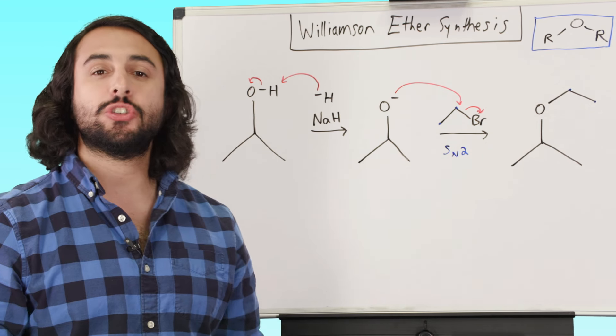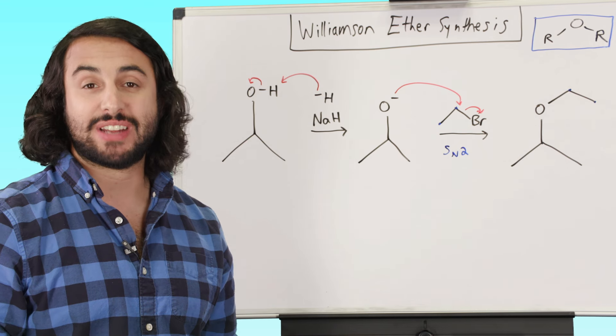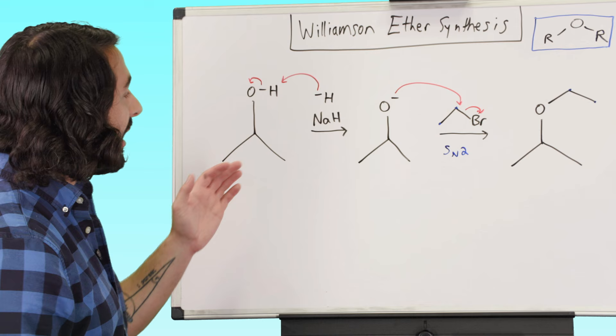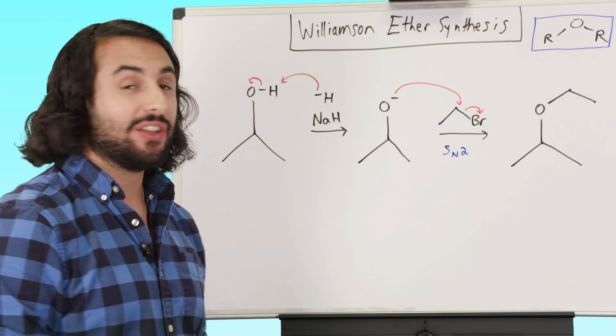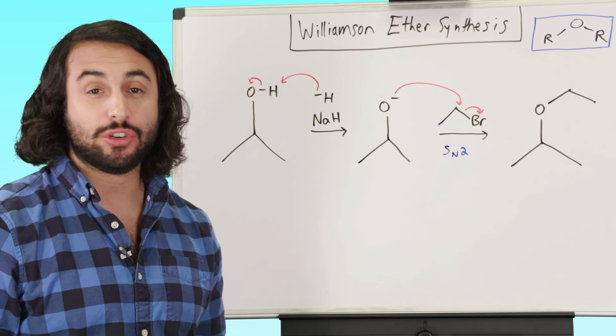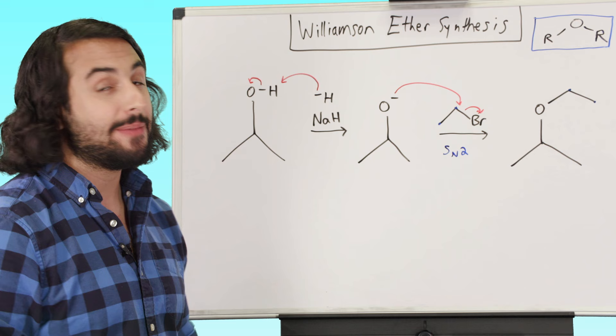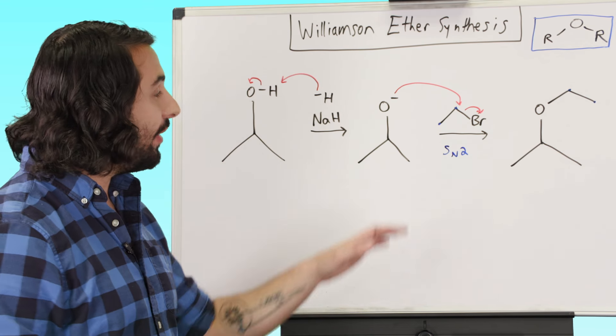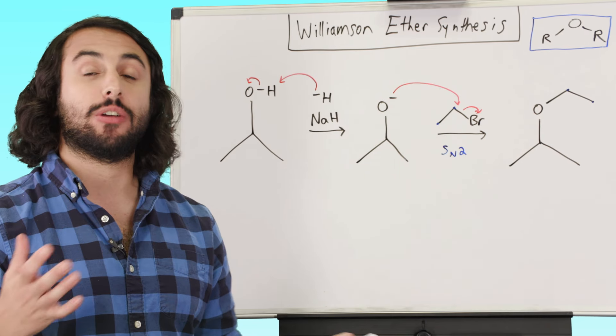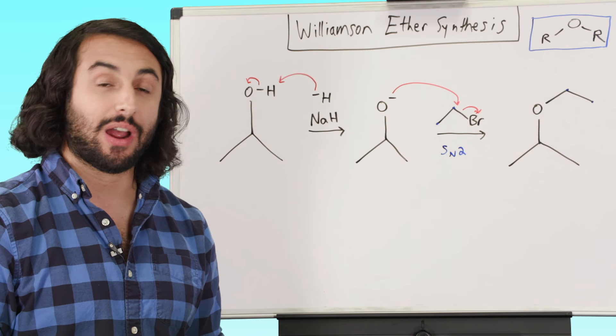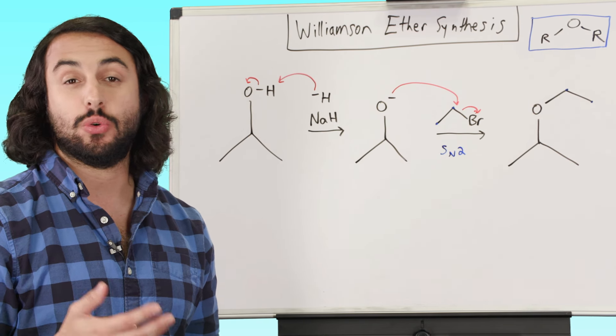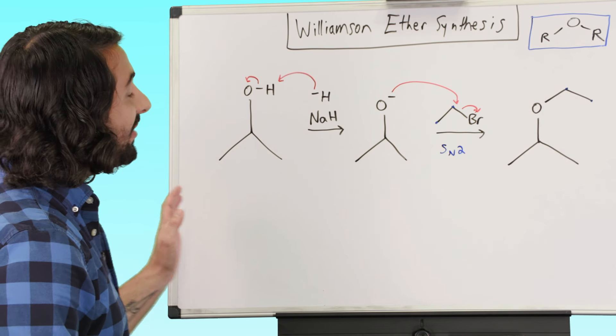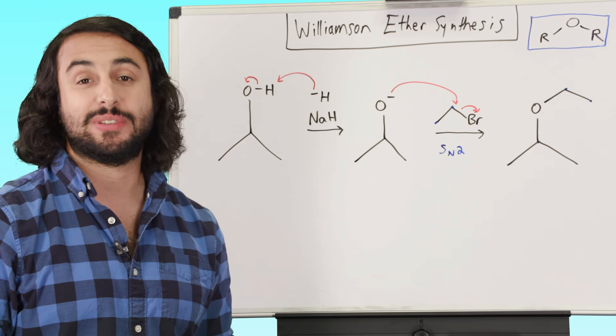So in terms of sterics, obviously this is going to work best when either or both of the alkoxide and the alkyl halide are relatively unhindered. In this case, we do have a primary alkyl bromide. So that's an ideal candidate for this reaction. As you start adding more steric bulk to either of these reagents, it's going to limit your yield. It's not going to work as well. But once again, that is our general overview for the Williamson ether synthesis.